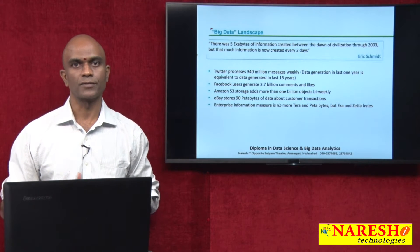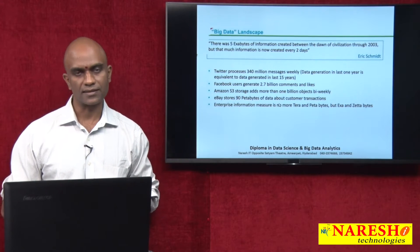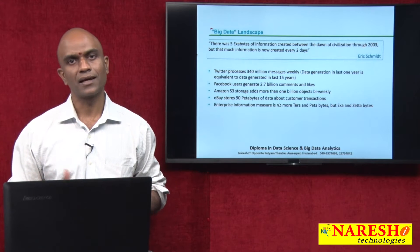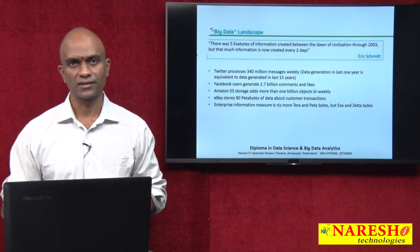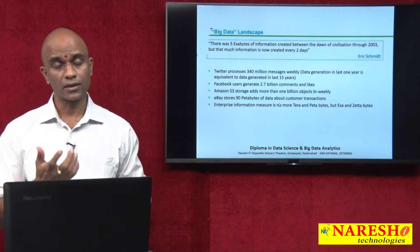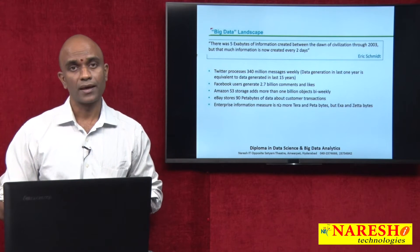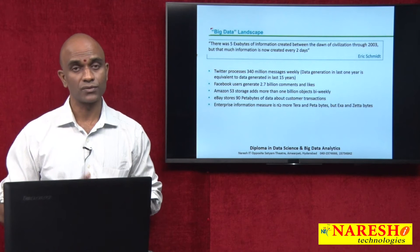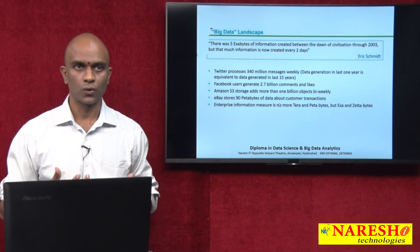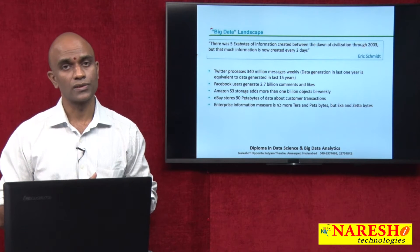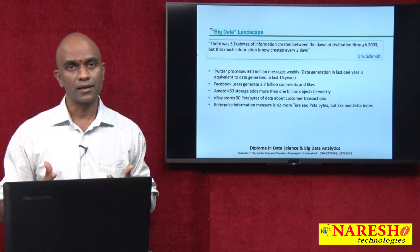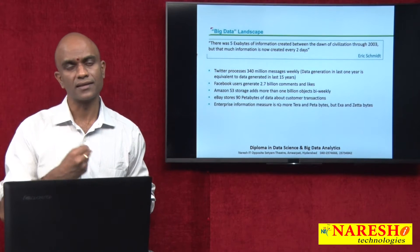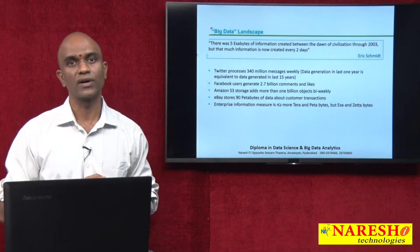We'll get a brief introduction about what is Big Data. Here is a Big Data landscape: it seems that right from the beginning of time till about 2003, the entire mankind has generated about 5 exabytes of data. To give you an idea: 1 terabyte equals 1000 GB, 1000 terabytes equals 1 petabyte, and 1000 petabytes equals 1 exabyte.